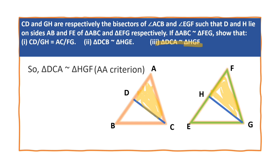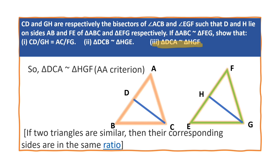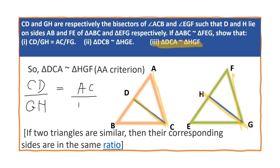Hence the third problem is proved now. Now, if two triangles are similar, then their corresponding sides are in the same ratio. So now we can write CD by GH is equal to AC by FG. Hence proved. This is the result we wanted. Hence the first problem is proved.